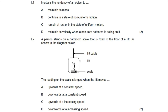Question 1.1 reads: inertia is the tendency of an object to — and the correct answer is C, where inertia is the tendency of an object to remain at a state of rest or in a state of uniform motion. We know that inertia is closely linked to the momentum of an object, which is in line with Newton's second law.